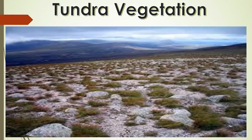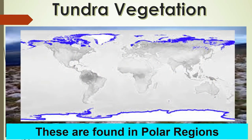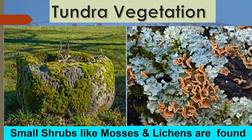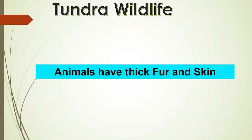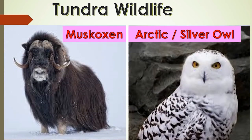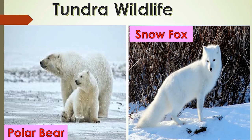Tundra vegetation is found in the polar regions of Europe, Asia and North America. Vegetation is very limited — mosses, lichens and very small shrubs are found here. It grows during the very short summer. The animals found here have thick fur and thick skin to protect themselves from the cold. Seals, walruses, musk oxen, arctic owls, polar bears and snow foxes are some of the animals found here.